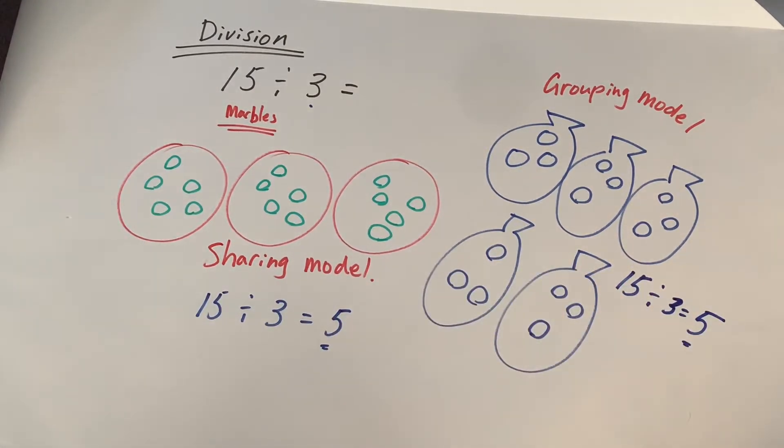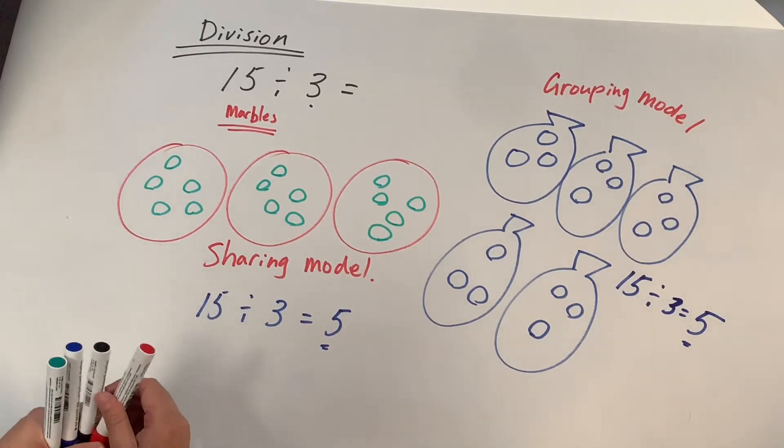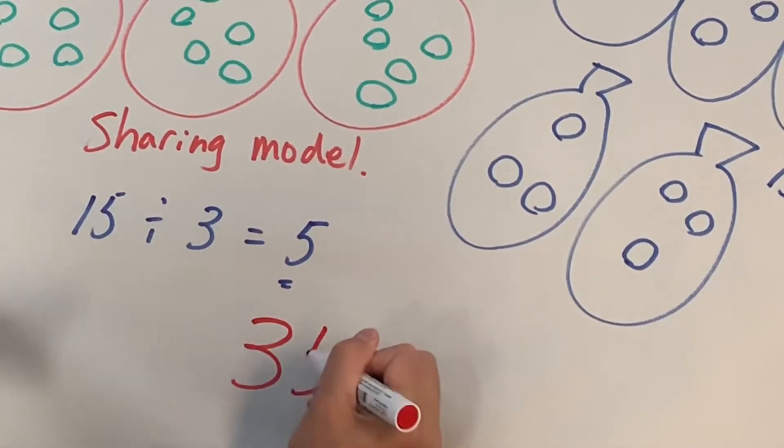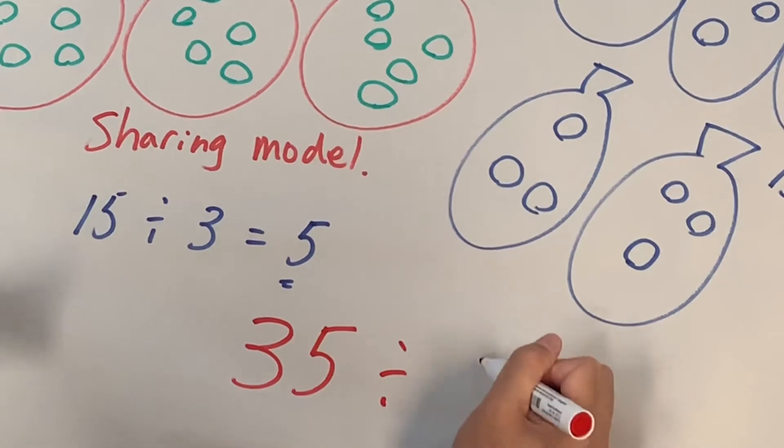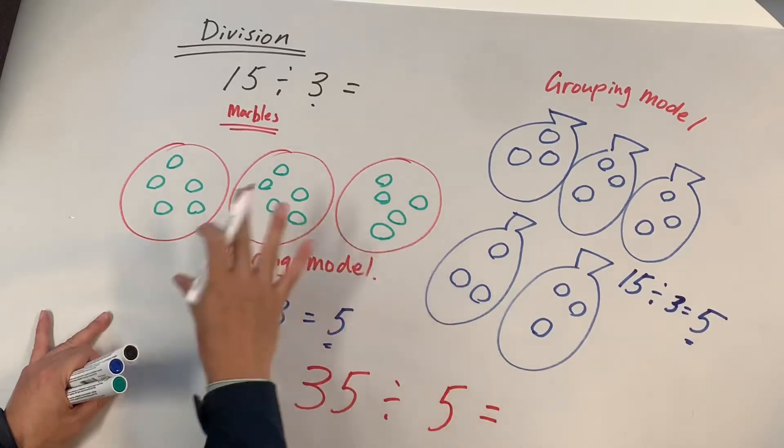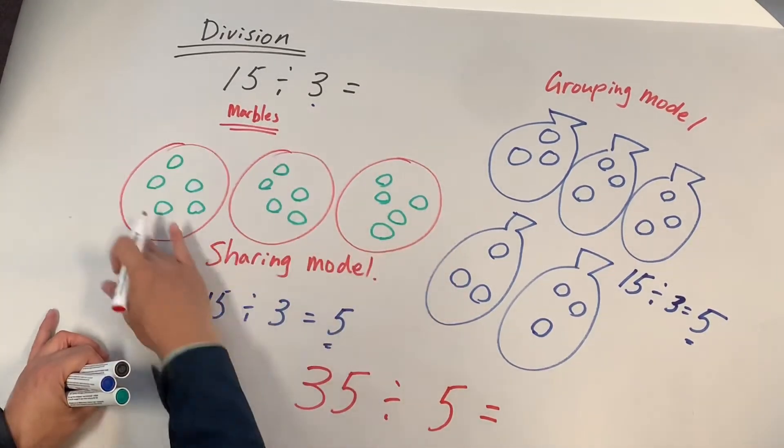Ready? This is your turn. I want you to do 35 marbles and divide it by five. Can you do both models? You can use a piece of paper. Can you make this sharing model?